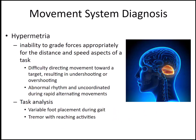Cerebellar disorders are classified under the movement system diagnosis of hypermetria — the inability to grade forces appropriately for a task in terms of speed or distance. A person might present with overshooting or undershooting a target, or dysdiadochokinesia. In gait, you may see variable foot placement, a compensatory wide base of support, or scissoring gait. There is also an intention tremor with reaching activities — present only during movement, not at rest.